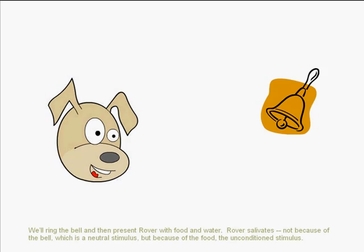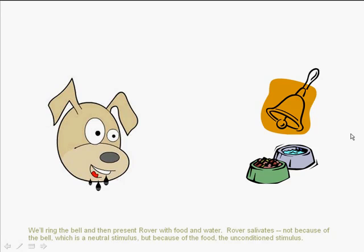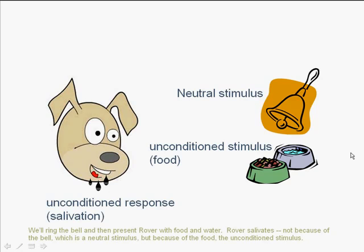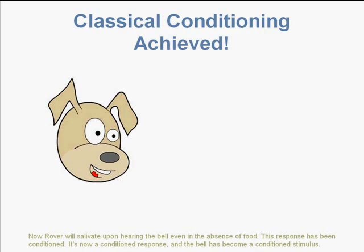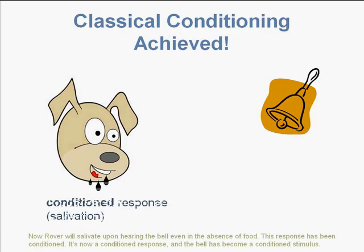Next, we'll simulate Pavlov's experiment. We'll ring the bell and then present Rover with food and water. Rover salivates, not because of the bell — which is a neutral stimulus — but because of the food, the unconditioned stimulus. Now, we're going to repeat this process. If we repeatedly ring the bell before presenting Rover with food, he'll be conditioned to respond to the bell. Now Rover will salivate upon hearing the bell, even in the absence of food. This response has been conditioned — it's now a conditioned response, and the bell has become a conditioned stimulus.